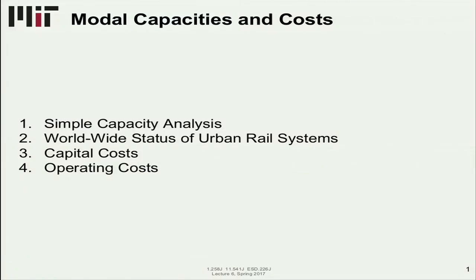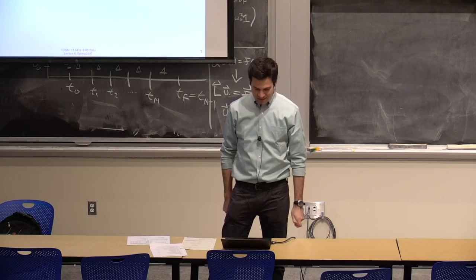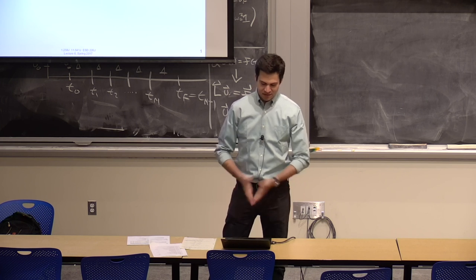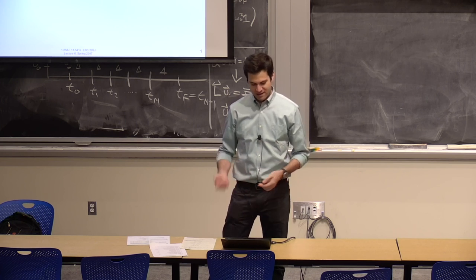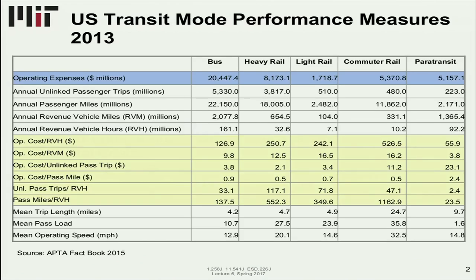We'll cover a simple capacity analysis that you might do as a back-of-the-envelope calculation. If somebody is asking you about something and it's a completely new service and you just want to have an idea, we'll give an example of that. Then we'll look at worldwide status of urban rail systems, both heavy rail and light rail, some busways, and we'll look at capital and operating costs at a high level, focusing more on the US using the National Transit Database.